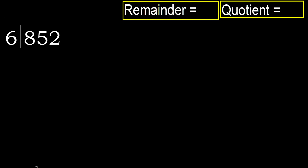852 divided by 6. 8 is not less, therefore with 8: 6 multiplied by which number is nearest to 8 but not greater? 6 multiplied by 1 — 6 is not greater, ok.